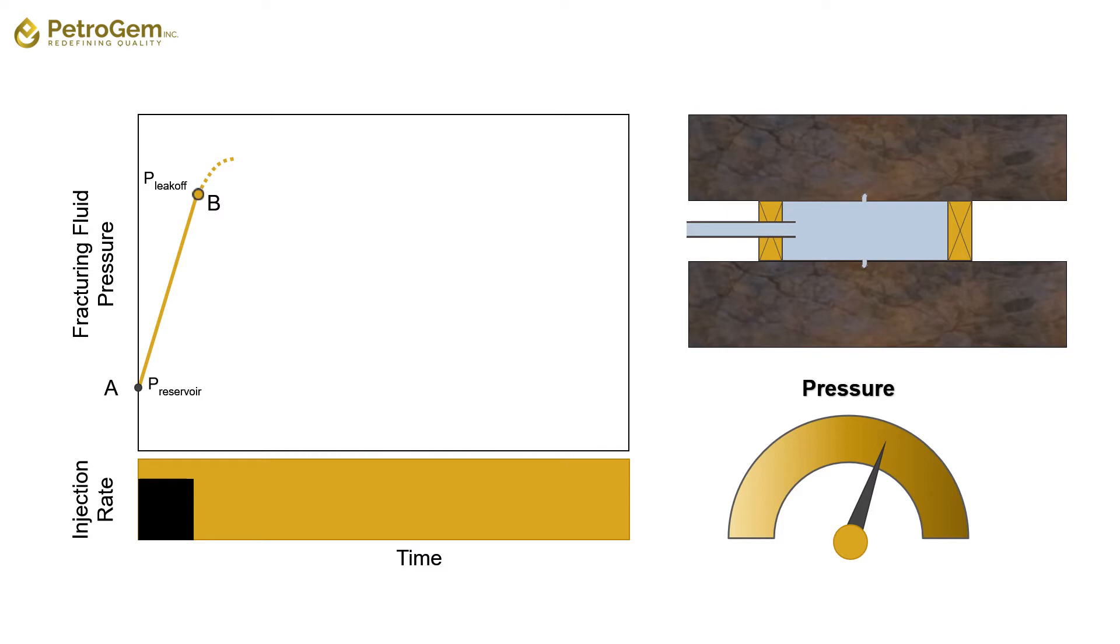Note that in the case of intact rock with no initial fractures, leak off pressure is usually greater than minimum in situ stress, and the reason is speculated to be the stress concentration around the borehole.